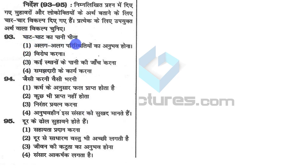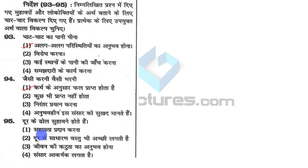This is muhavara/lokakti — they have given one idiom and are asking for its meaning. 'Ghat ghat ka paani peena' means 'alag alag paristhitio ka anubav hona' — you have been to many places and have a lot of different experiences, having faced the difficulties of life. 'Jaisi karani vaisi bhani' means whatever you sow you shall reap — karma ke anusar falprapth hota hai. 'Dur ke dhol suhaavne hoote hai' means from a distance everything seems good, but when you actually get into something you come to know the difficulties — dur se sadharan vastu bhi achhi lagti hai.